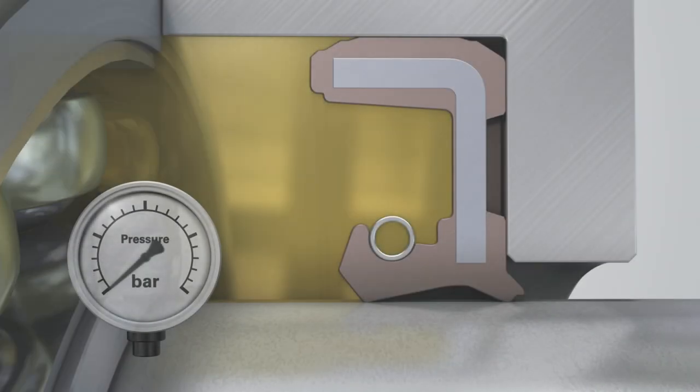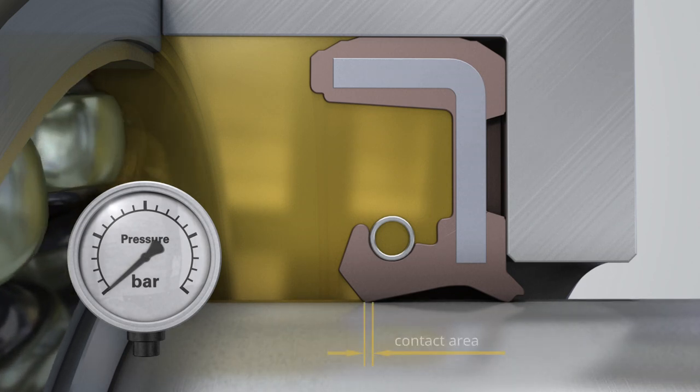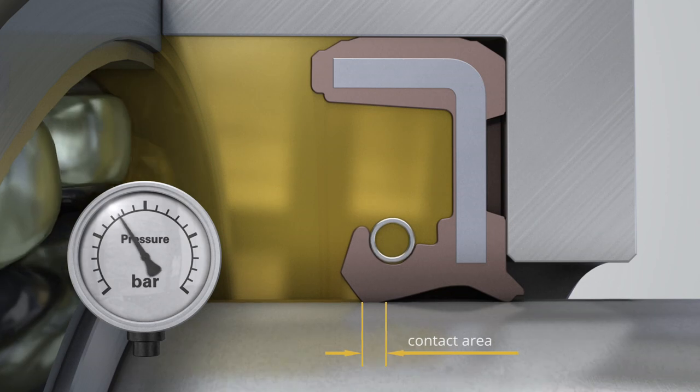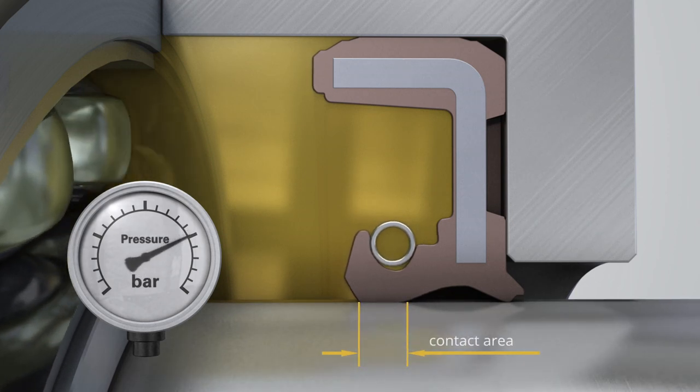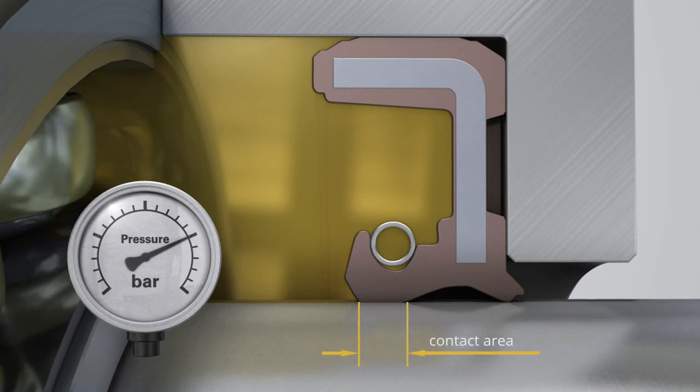The elastic deformation of the sealing lip increases as the pressure increases. When a certain pressure level is reached, it lies flat against the shaft. Under these conditions, the BABSL can be used for a limited period of time and at low speeds.